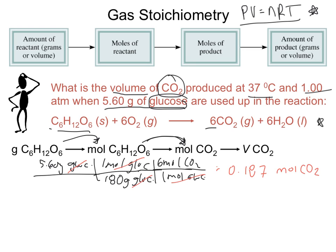I've used regular stoichiometry to convert from grams of one substance — glucose — into the moles of another substance, using the mole ratio and the common language of the equation, which is the mole. Now that I have my moles of CO2, they want us to tell them the volume that CO2 takes up — that's when the ideal gas law comes into effect. PV = nRT, and since we're solving for volume, the equation becomes V = nRT/P.